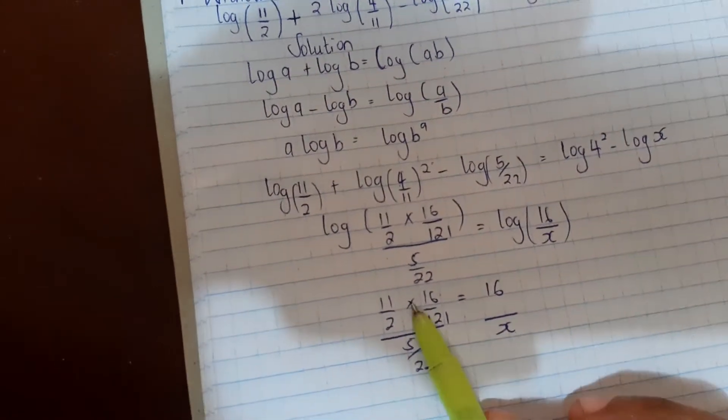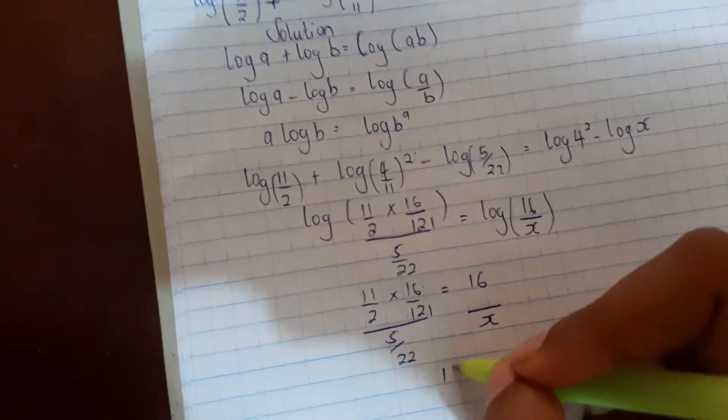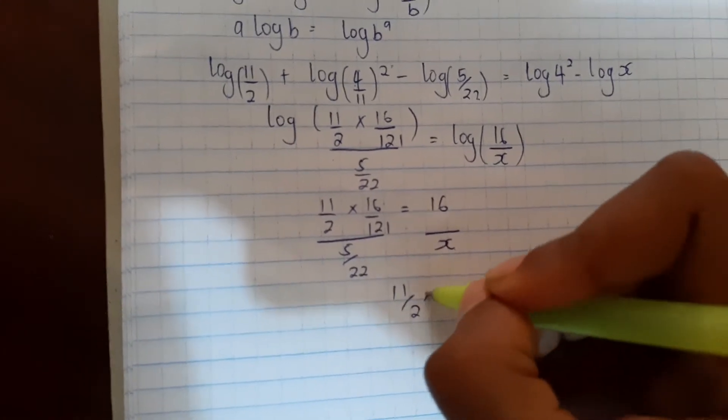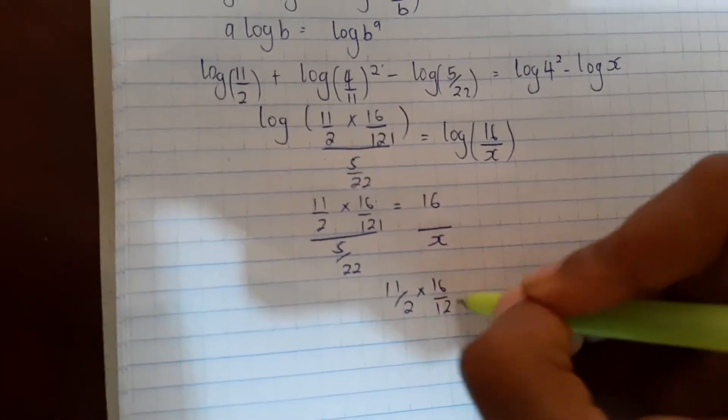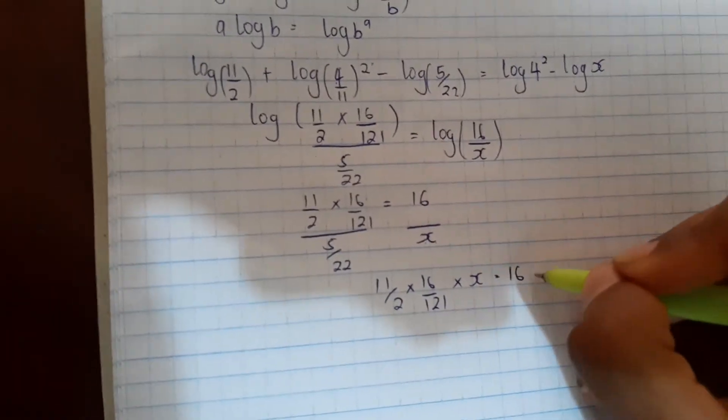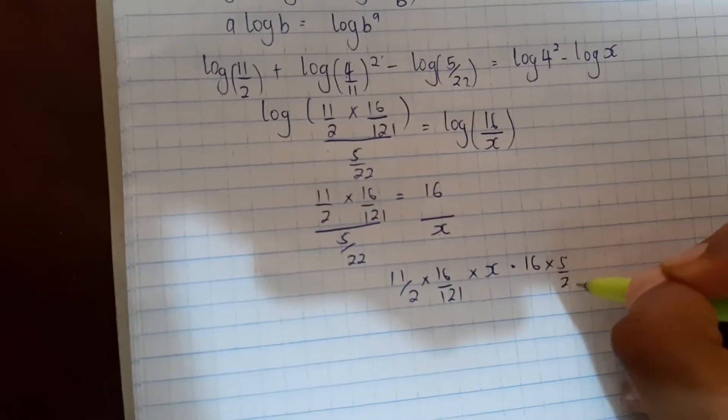We cross multiply. So we have 11/2 times 16/121 times x equals 16 times 5/22.